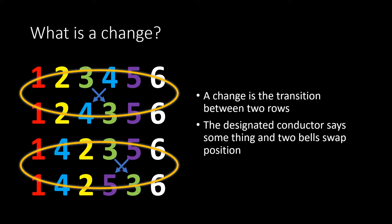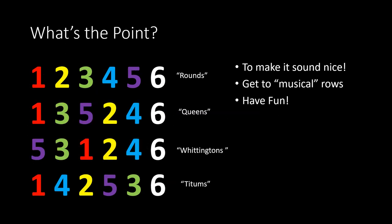When ringing, the designated conductor says something and two bells swap over. Now we know what a row is and what a change is — but what is the point? Generally when we're doing call changes, we're ringing for something, say a service or a wedding, and we want to make it sound nice. We start in rounds, move the bells around, swap bells over, so that we get changes that sound nice.